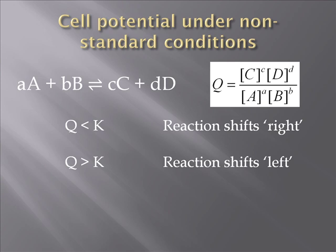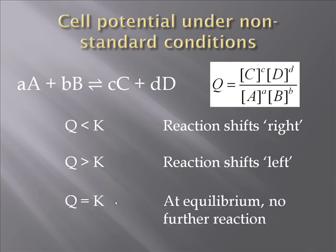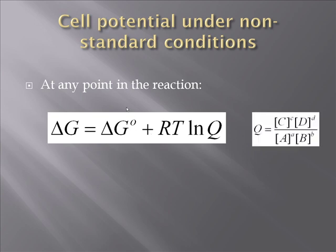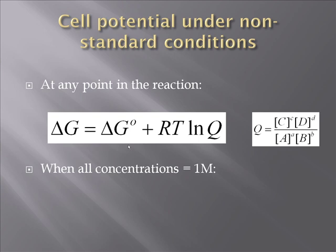From the thermodynamics of the system, relating the composition described by Q to the driving force: delta G, the driving force for the reaction, equals delta G0, the driving force under standard conditions, plus RT ln Q. That's always true. We're going to play around with this equation as we build up the Nernst equation, looking at what it becomes under some specific conditions.